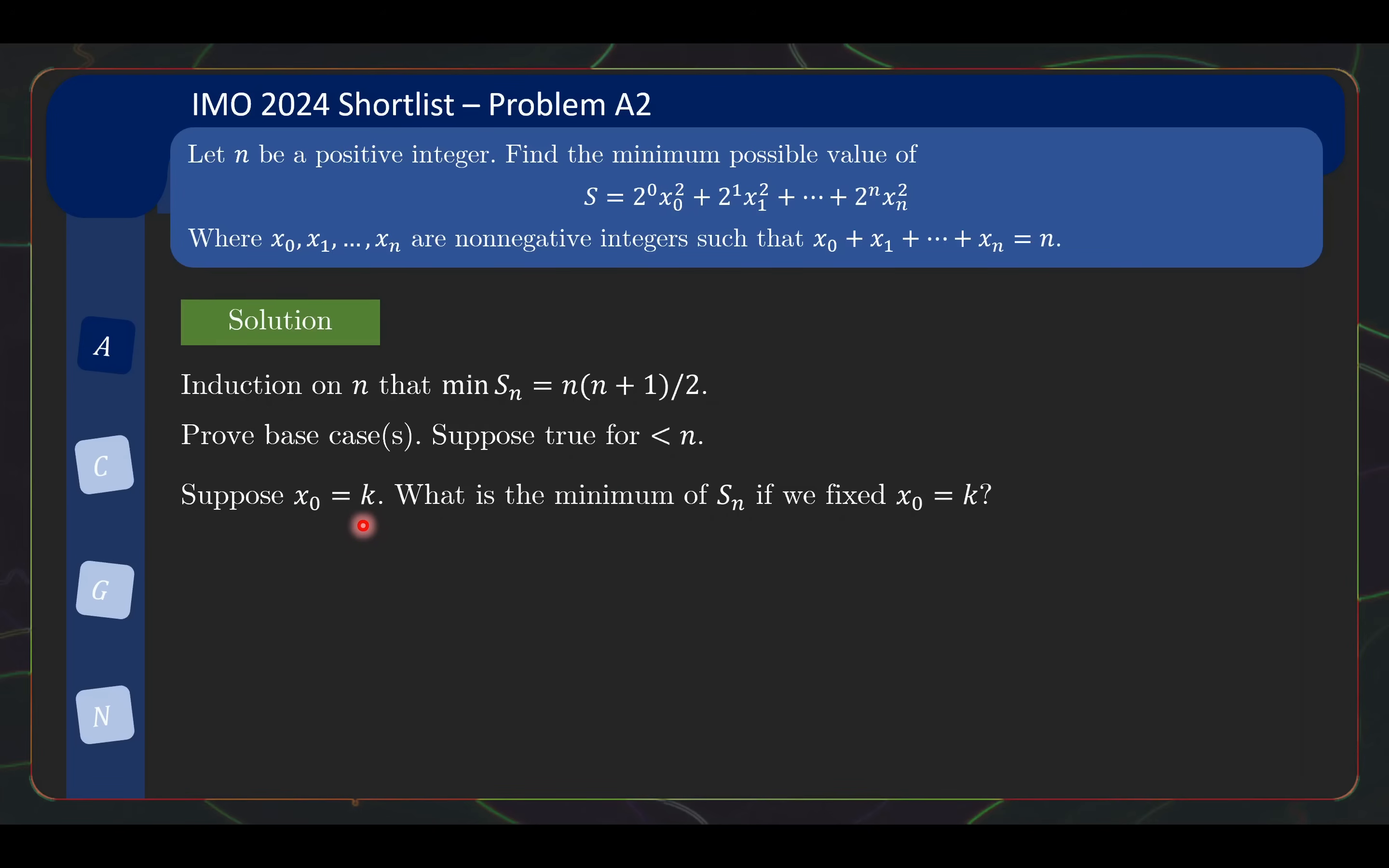How about doing something about the first term? By the first term, it can be any value. But how about fixing the first term and then see what happens? We suppose x0 = k. Then we ask ourselves, what is the minimum of Sn under the scenario where we have fixed x0 = k? Find that minimum, then you vary across all possible values of k and choose the minimum of that minimum. So fixing x0 is a viable way to approach this. Having fixed x0 = k, the expression to minimize becomes this - I basically replace x0 by k here. The constraint is that x1 + ... + xn now equals n-k.